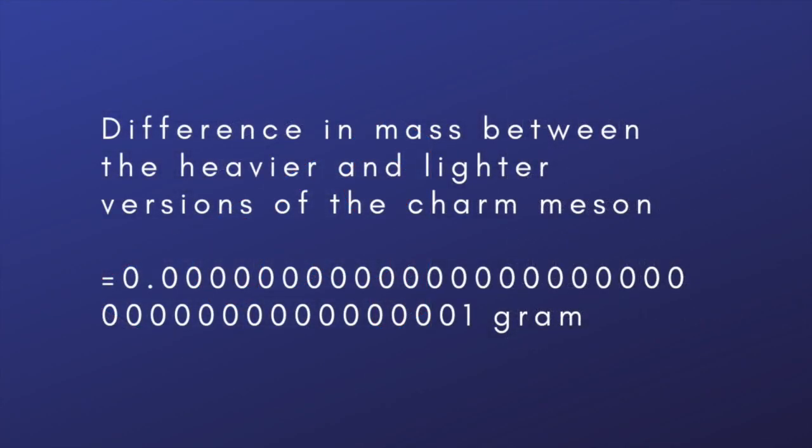The difference in mass is tiny, about 100 trillion trillion trillionth of a gram, but it's this tiny difference that researchers have now measured, confirming for the first time that the Charm Meson can oscillate between the two states.